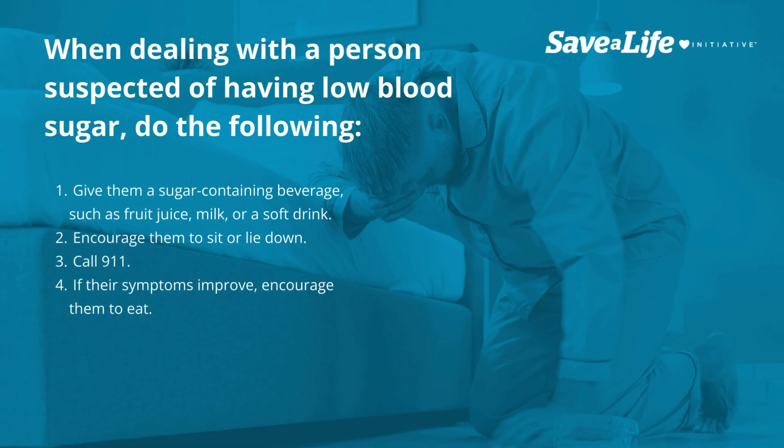When dealing with a person suspected of having low blood sugar, do the following: 1. Give them a sugar-containing beverage, such as fruit juice, milk, or a soft drink. 2. Encourage them to sit or lie down. 3. Call 911.